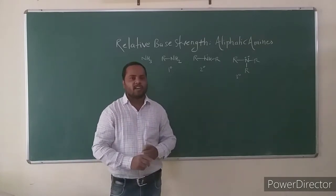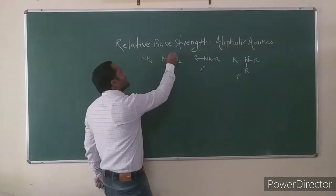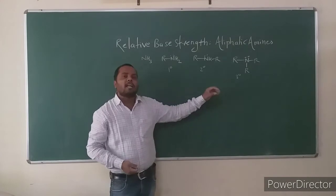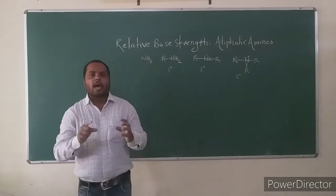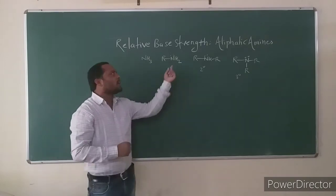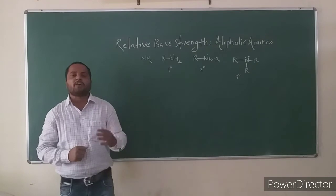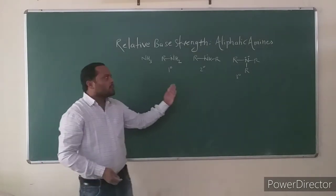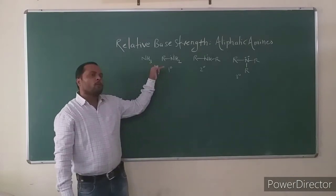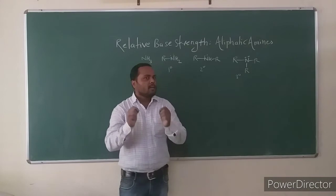As the +I effect increases, the electron density around the nitrogen atom increases, and the lone pair electrons are more easily available for donation. On the basis of this electronic (inductive) effect, the expected order of basicity is: ammonia is weaker than primary amine, primary amine is weaker than secondary amine, and secondary amine is weaker than tertiary amine.